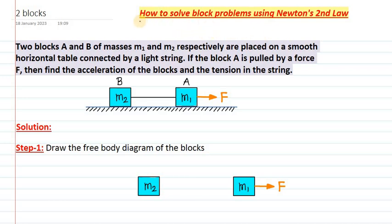Hello students. In this video we are going to learn how to solve block problems using Newton's second law. In this question we have two blocks A and B of masses M1 and M2 respectively, placed on a smooth horizontal table connected by a light string. If block A is pulled by a horizontal force F, find the acceleration of the blocks and the tension in the string.